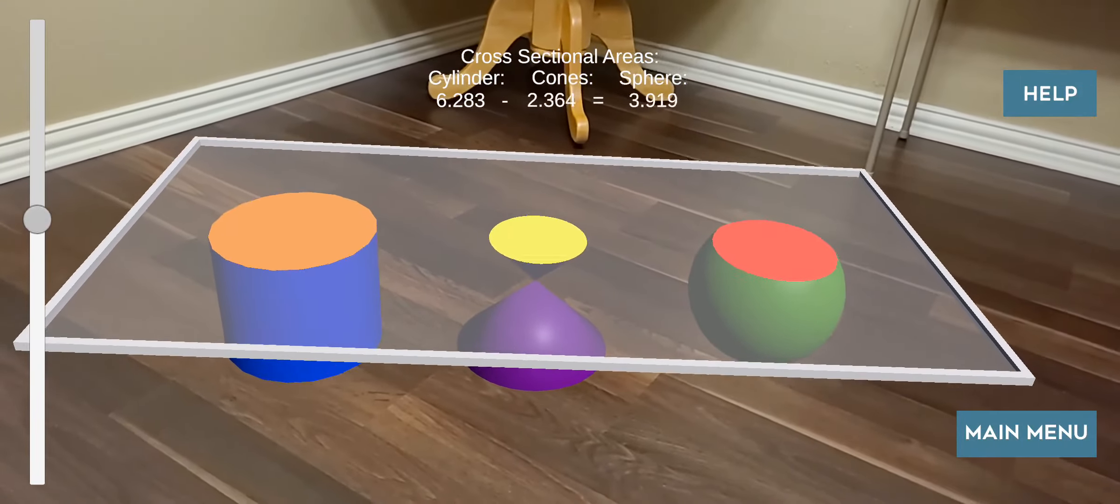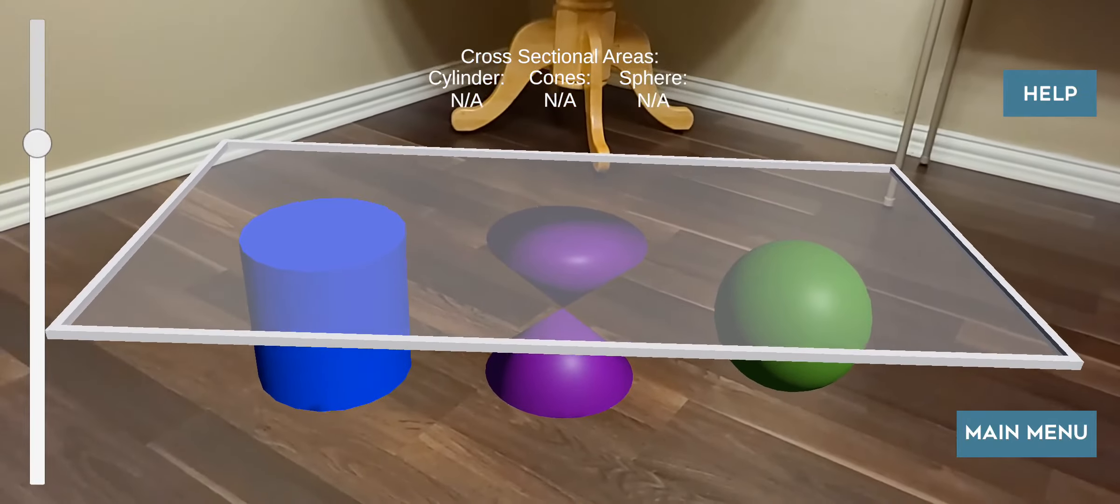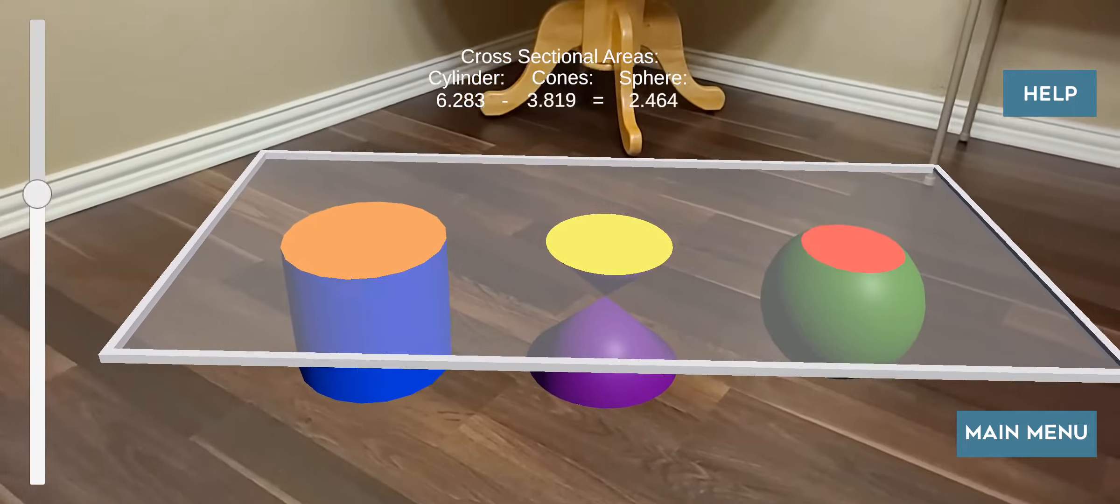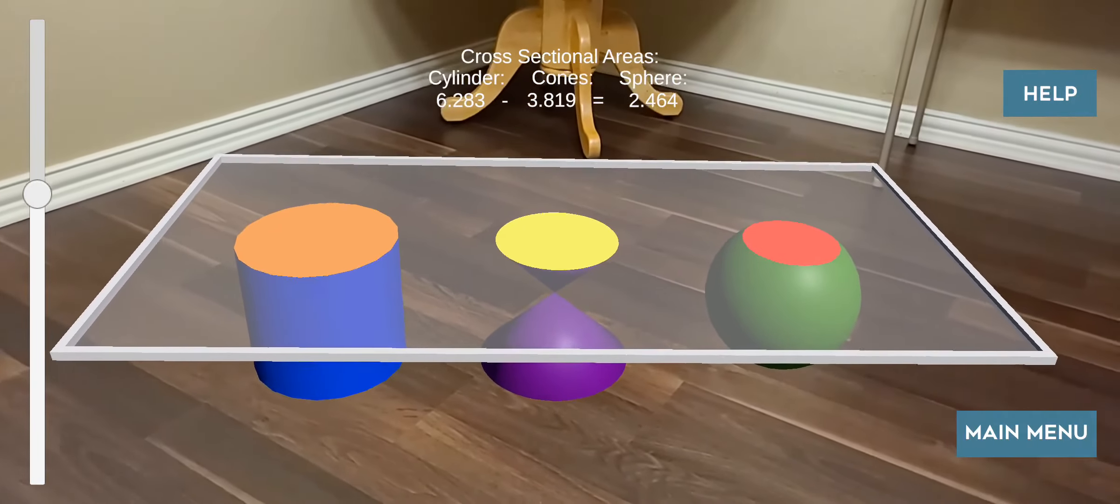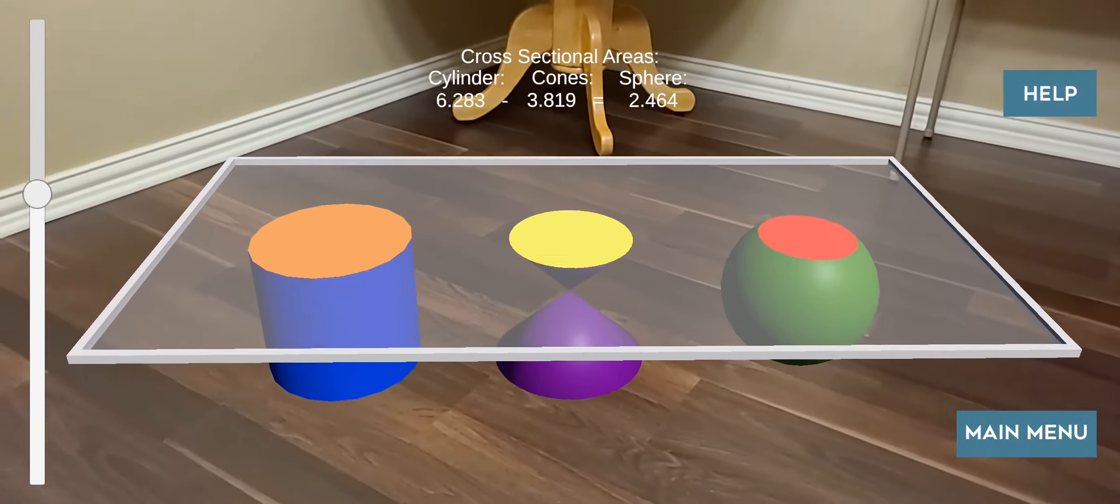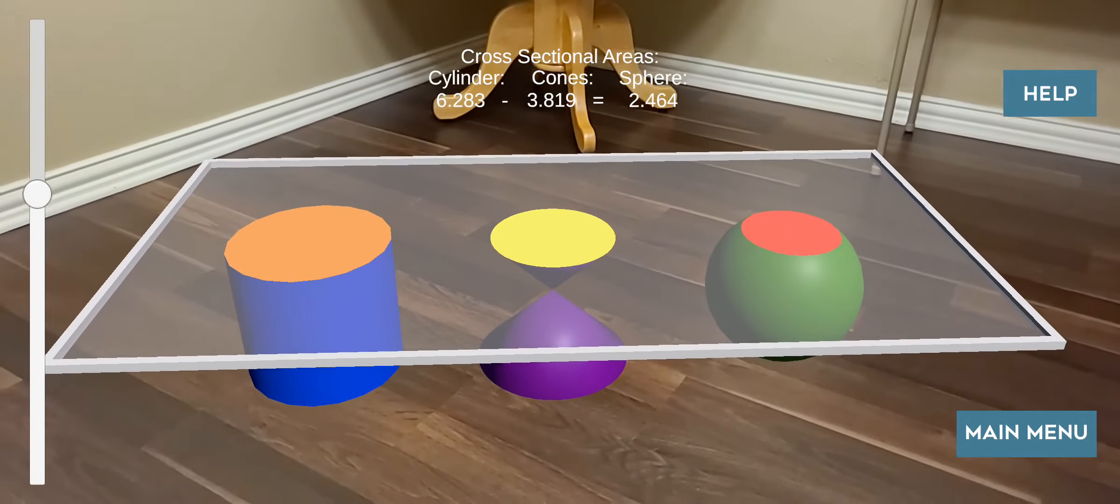Just as Archimedes did, you can note that the cross sectional area of these objects are related in the following way. The cross section of the cylinder is constant. It is always a circle. It is equal to the sums of the areas of the cross sections of the cones and the sphere. The decimal approximation of these surface areas is displayed at the top of the screen for convenience.